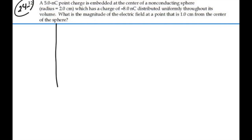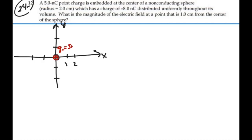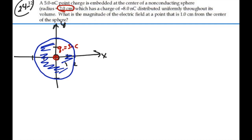Let's envision what we have here. We'll set up a two-dimensional coordinate system divided into centimeters. At the center, we have one charge — let's put that in red. The value of that charge is Q1 equal to 5 nanocoulombs, positive. Then we have a distribution of charge in a sphere of radius 2 centimeters, filled with uniform charge, and the value of that charge, called Q2, is equal to negative 8 nanocoulombs.